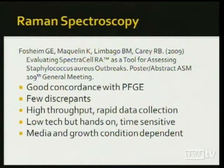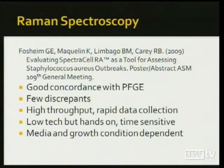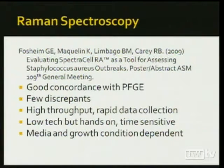For Staph aureus, this system found good concordance with pulse field with few discrepants. There's high throughput — analysis for 12 to 24 strains in about 90 minutes. It's low tech since you're only pipetting the organism with no extraction. However, it's time sensitive and media and growth condition dependent, because different molecular characteristics will be expressed depending on your growth conditions.